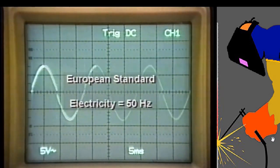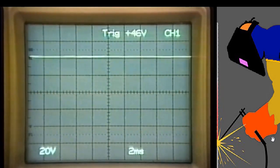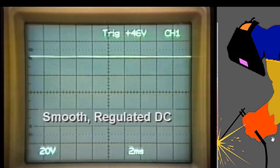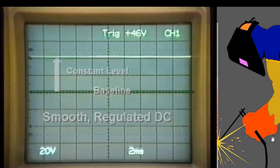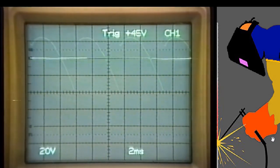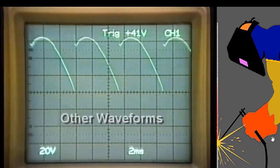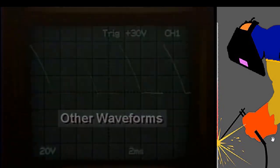50 hertz alternating current is used in most European countries. On the oscilloscope, smooth regulated direct current looks like a simple flat line — it extends at a constant level above the baseline. So smooth DC has no waveform. Electricity can have other waveforms, and we'll talk about these as we look at the welding process.